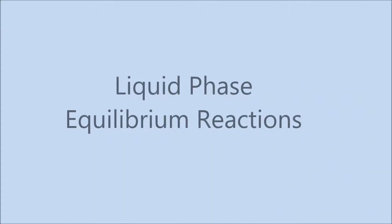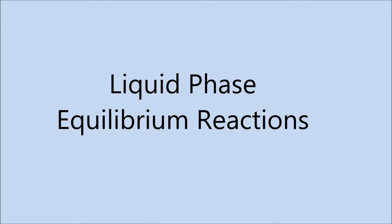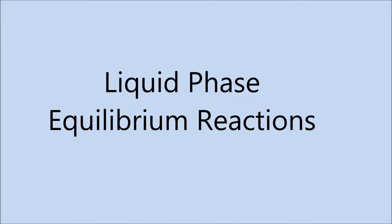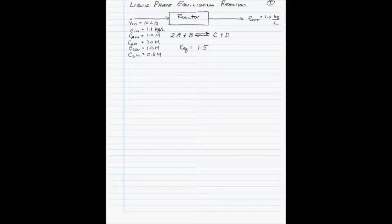This example shows us how to perform material balances around a chemical reactor in which a liquid phase equilibrium reaction takes place. We have a liquid feed at a flow rate of 10 liters per second, which we will call V dot in. The density of the solution is 1.1 kilograms per liter.